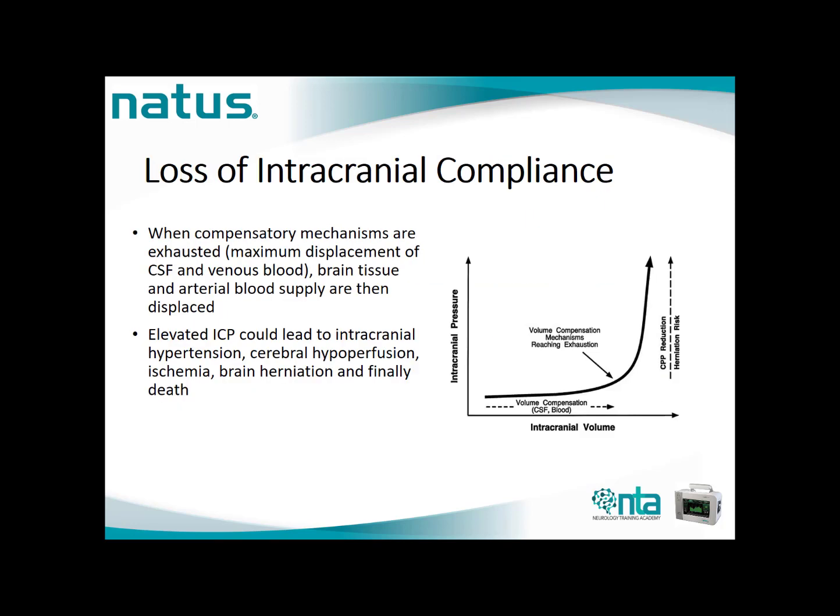When the compensation mechanisms are exhausted — with maximum displacement of CSF and venous blood — brain tissue and arterial blood supply are then displaced. Elevated ICP could lead to intracranial hypertension, cerebral hyperperfusion, ischemia, brain herniation, and finally death. As shown in the graph on the right side of the screen, after the additional mass exceeds the point of compensation, intracranial pressure will increase rapidly.